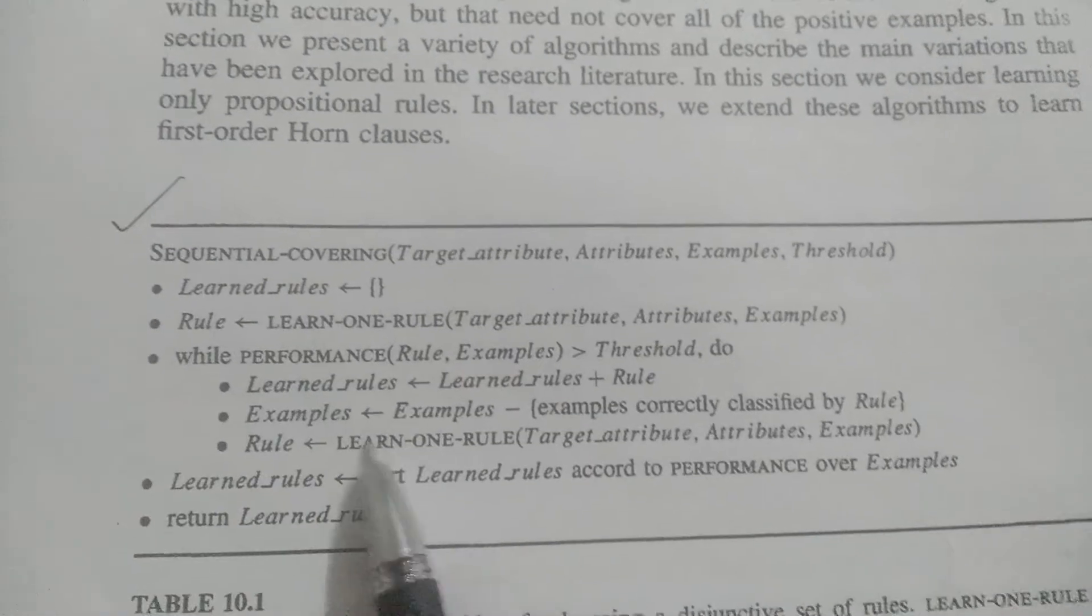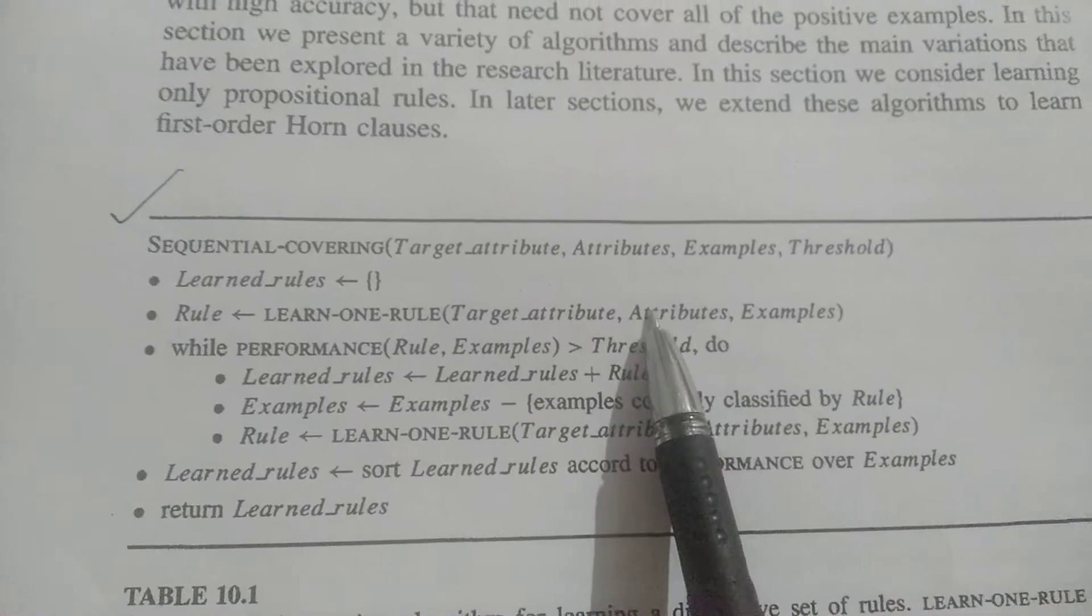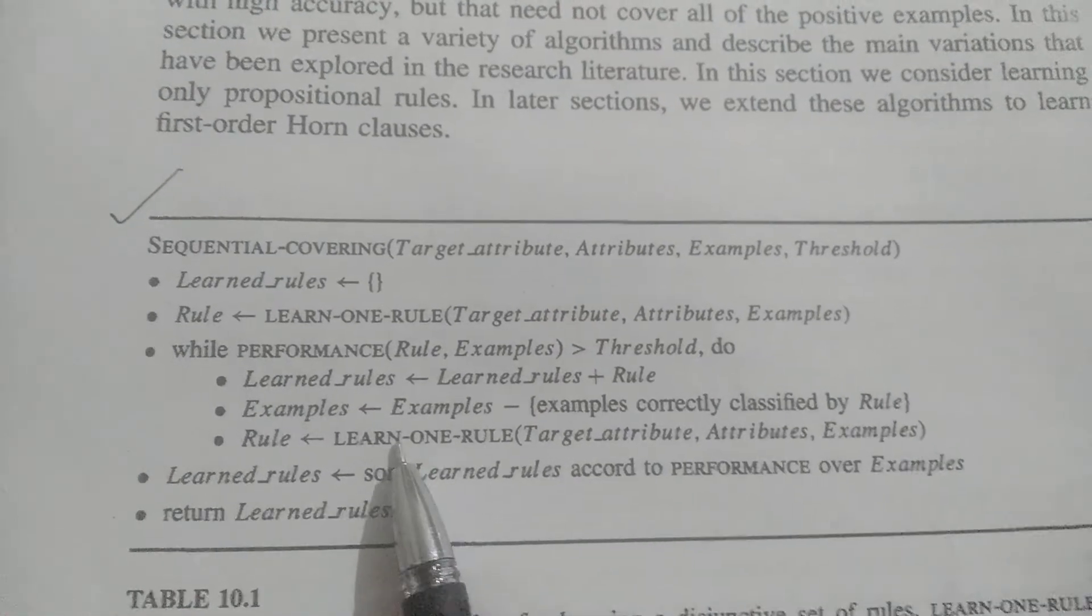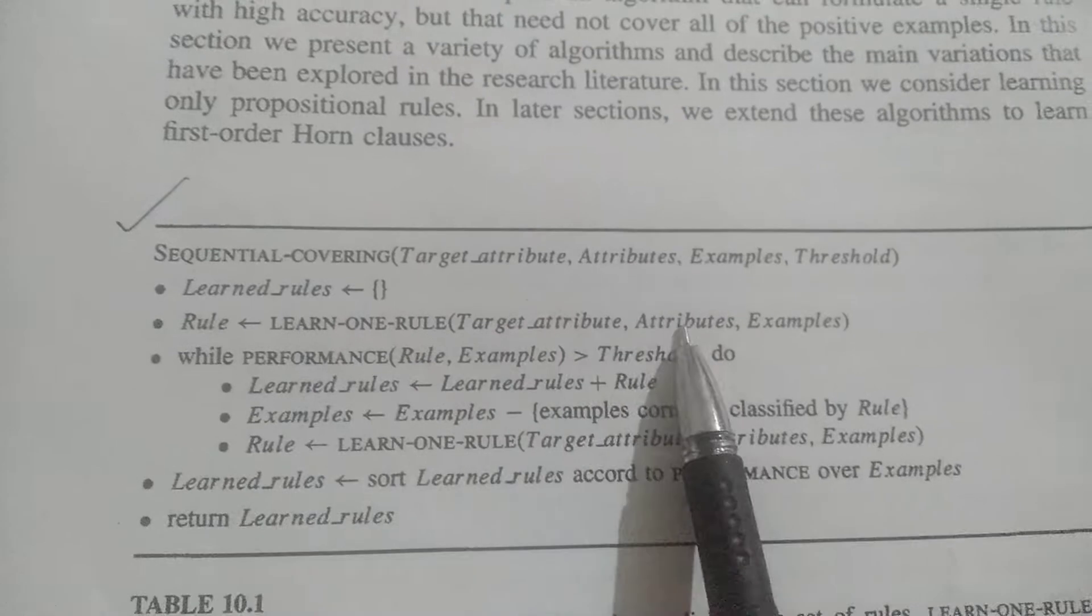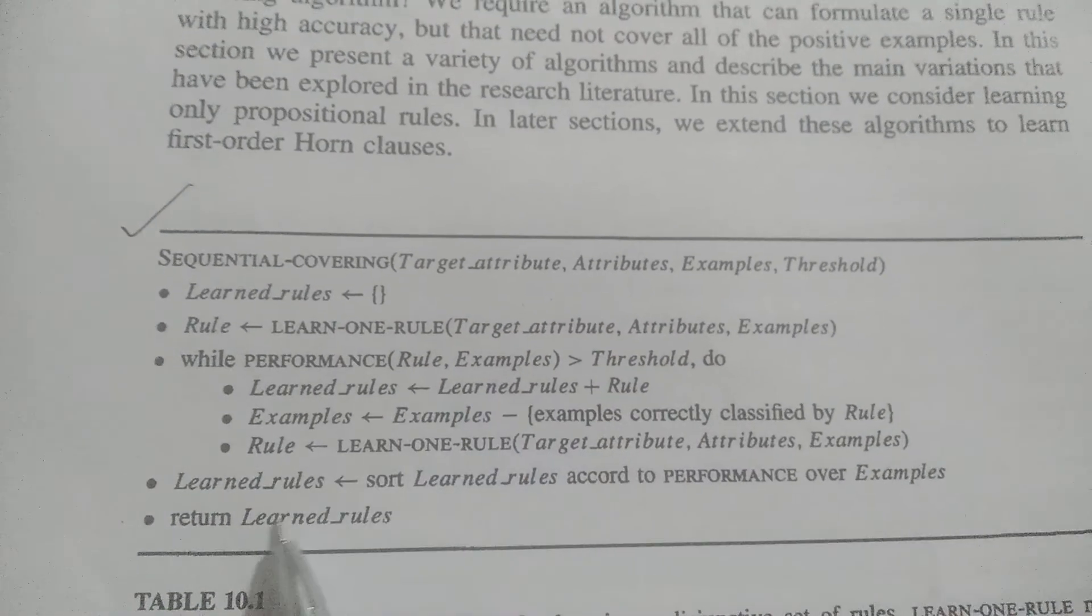Again, I learn the next rule using learn one rule with target attribute, attributes, and examples. Again, we enter the while loop if performance is greater than threshold. Once the rule performance is not greater than threshold, we exit the while loop.